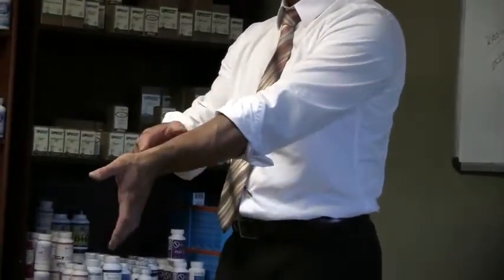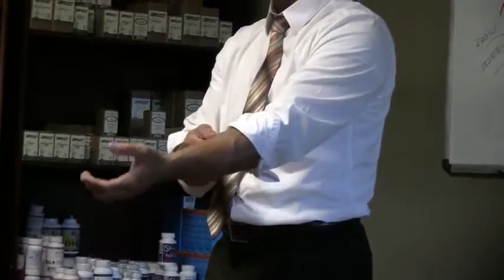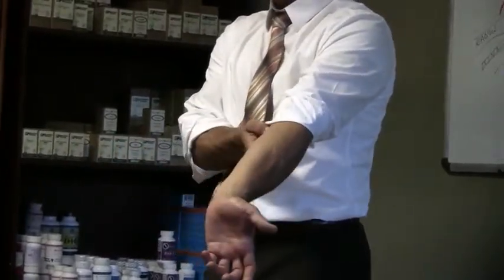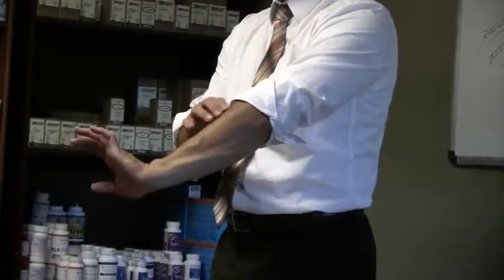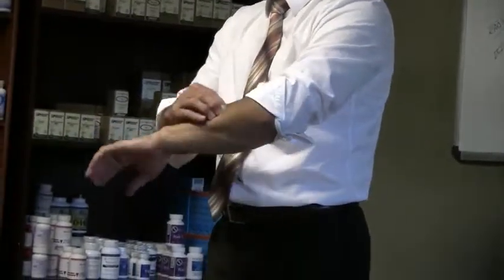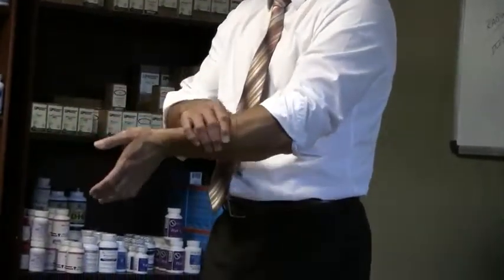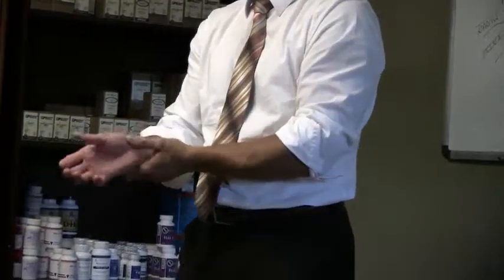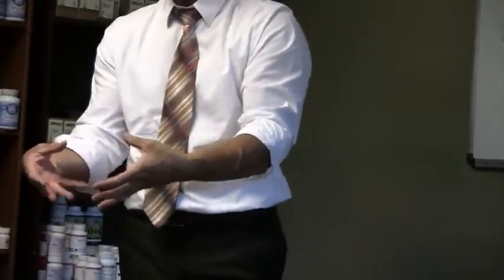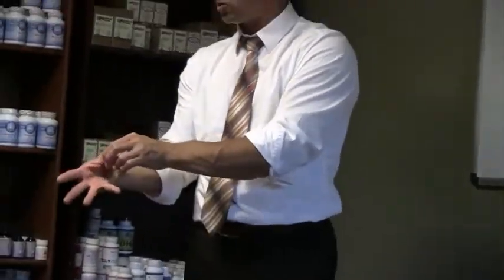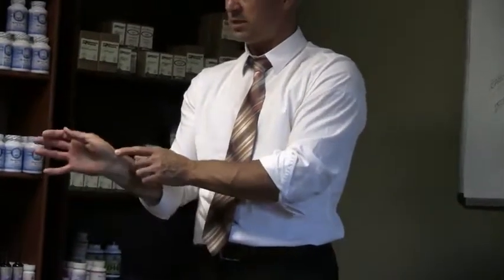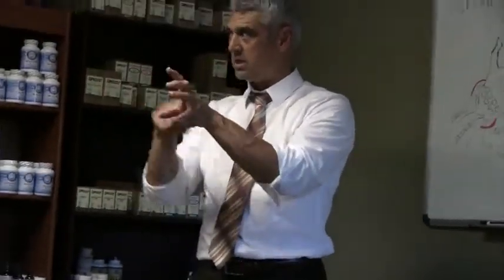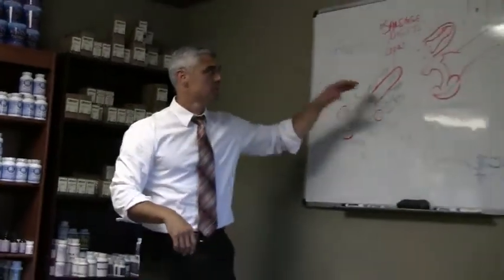So, the flexor pollicis muscle here and then the flexor group on the inside of the elbow and the extensor group on the back of the elbow. So, if you can actually release those muscles, usually you can relieve some of that pain because those muscles get pulled or start to draw that thumb in so strongly on the flexor side that it actually creates that joint pushing into itself.